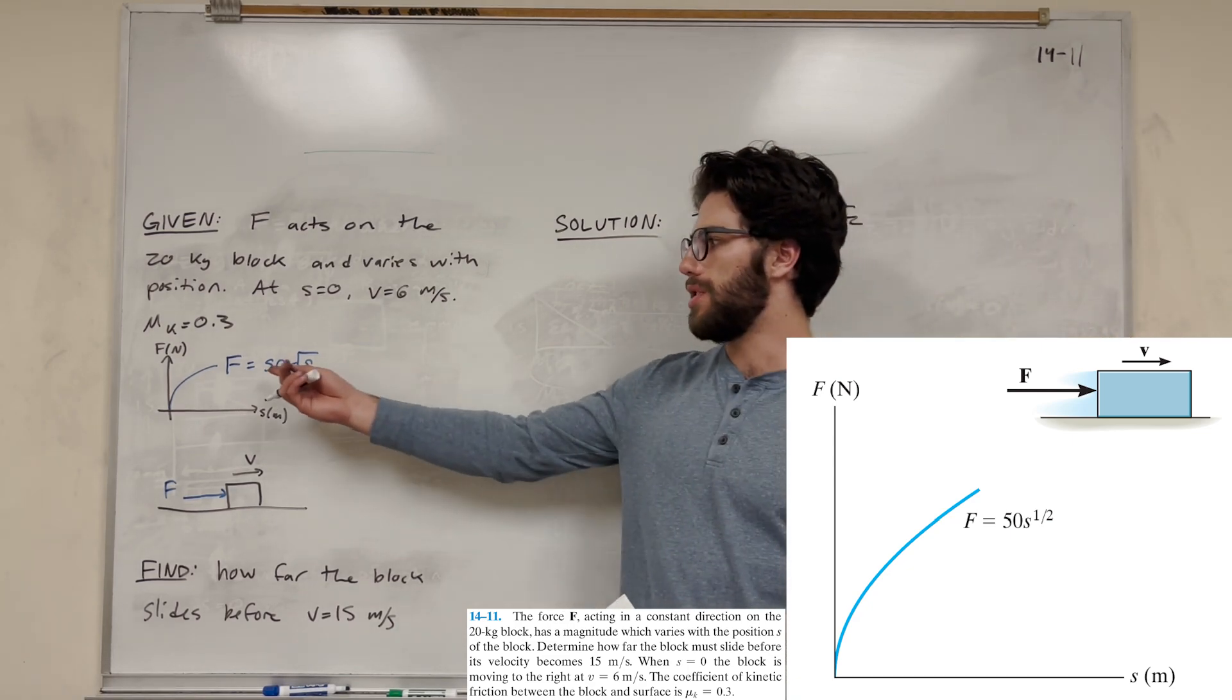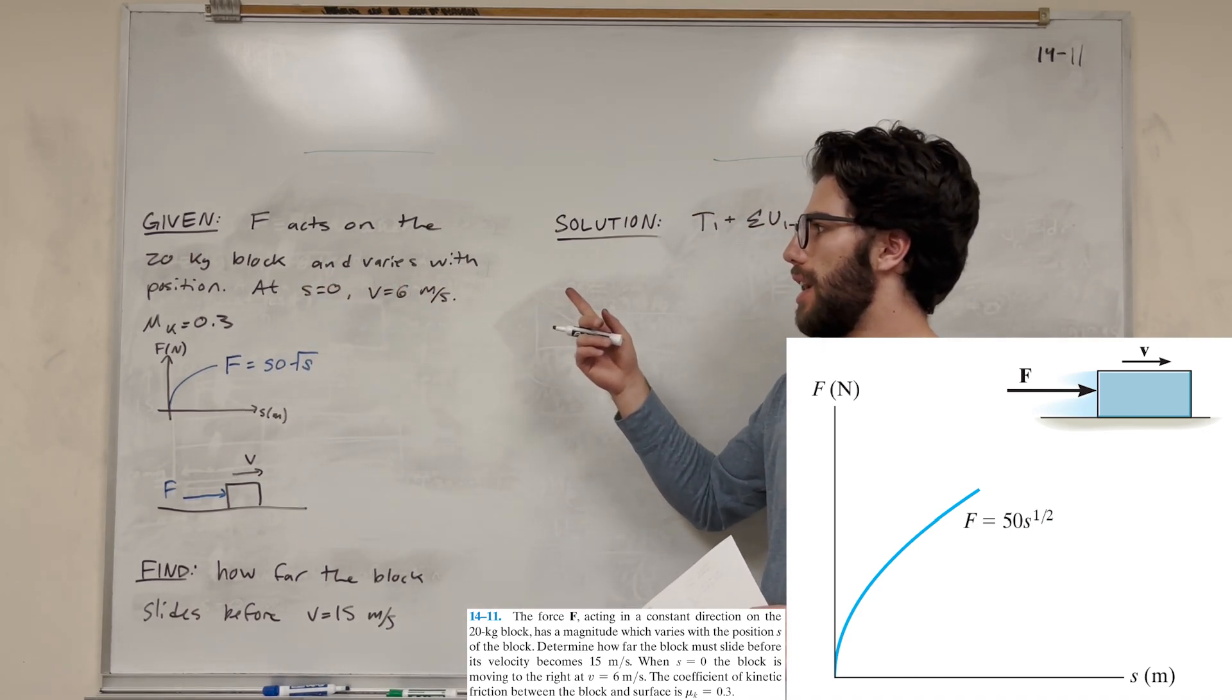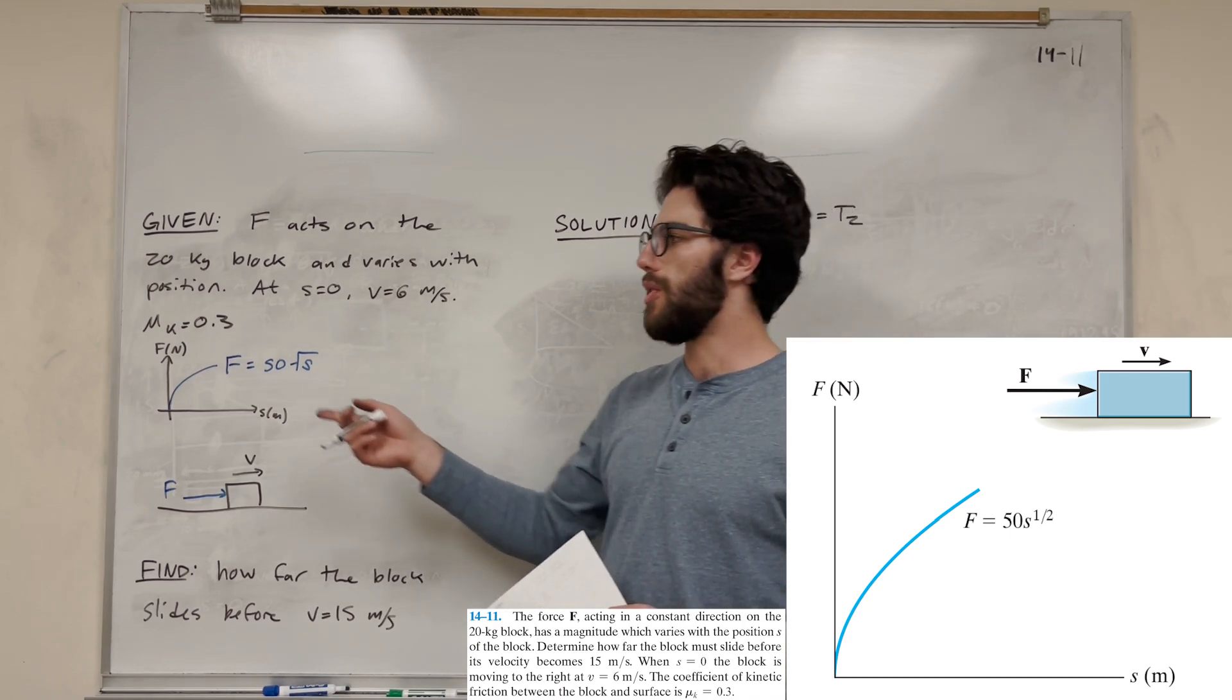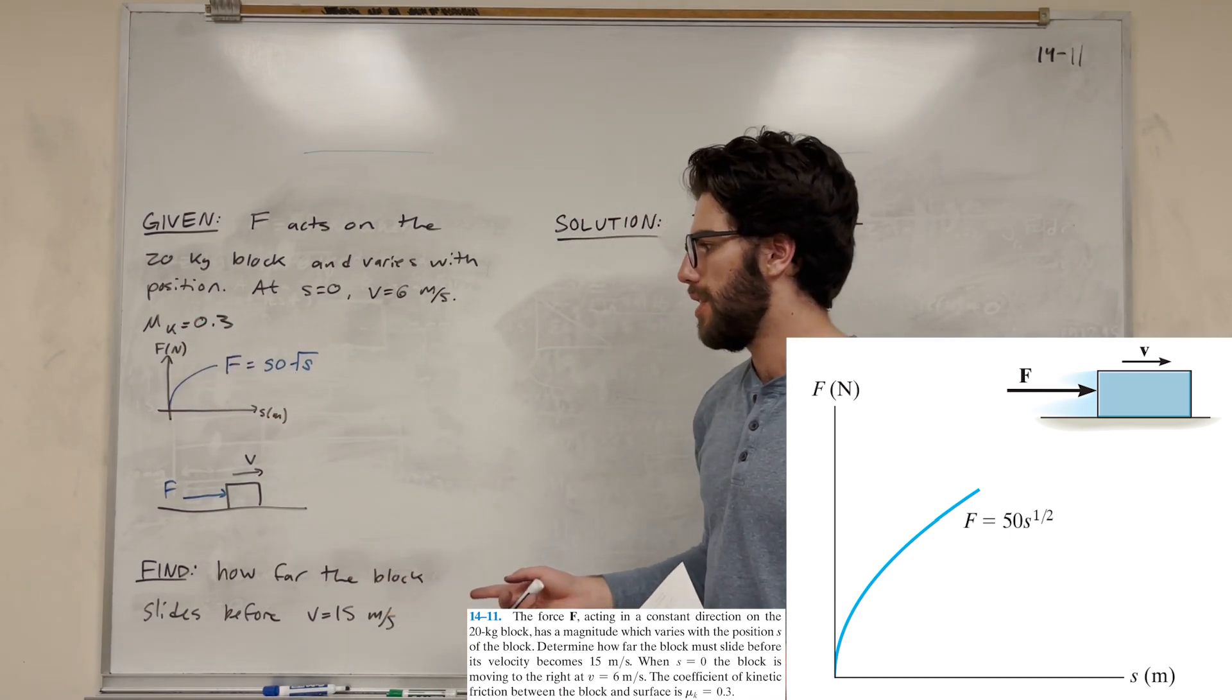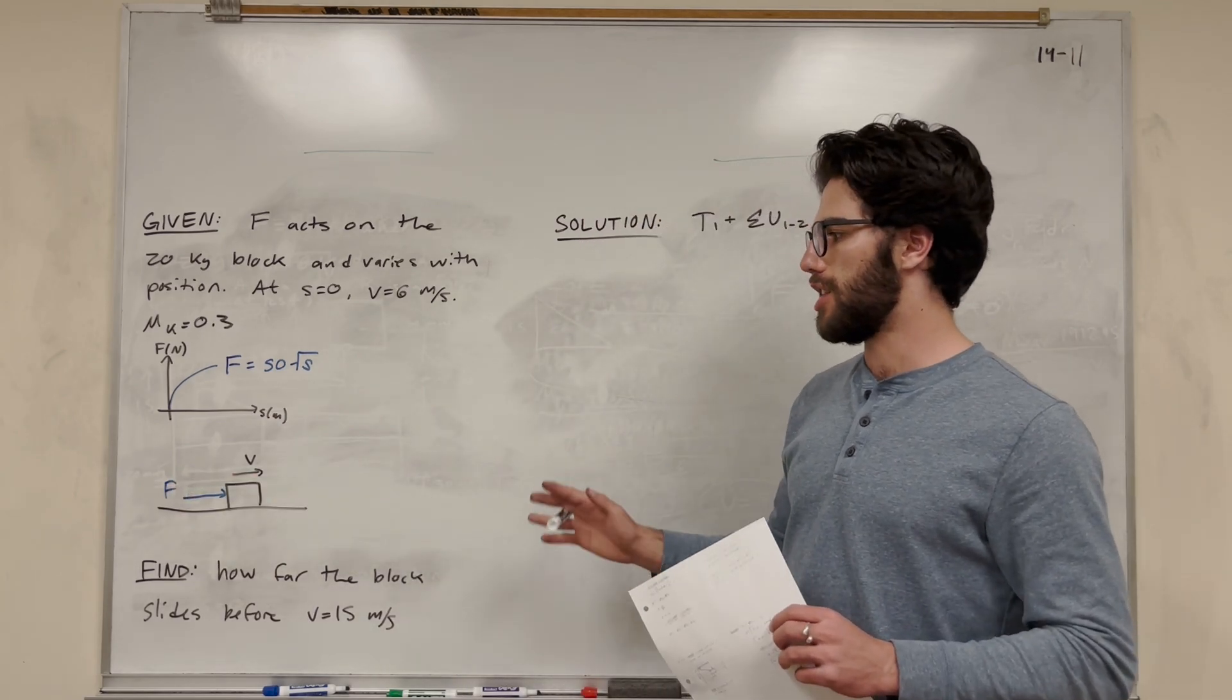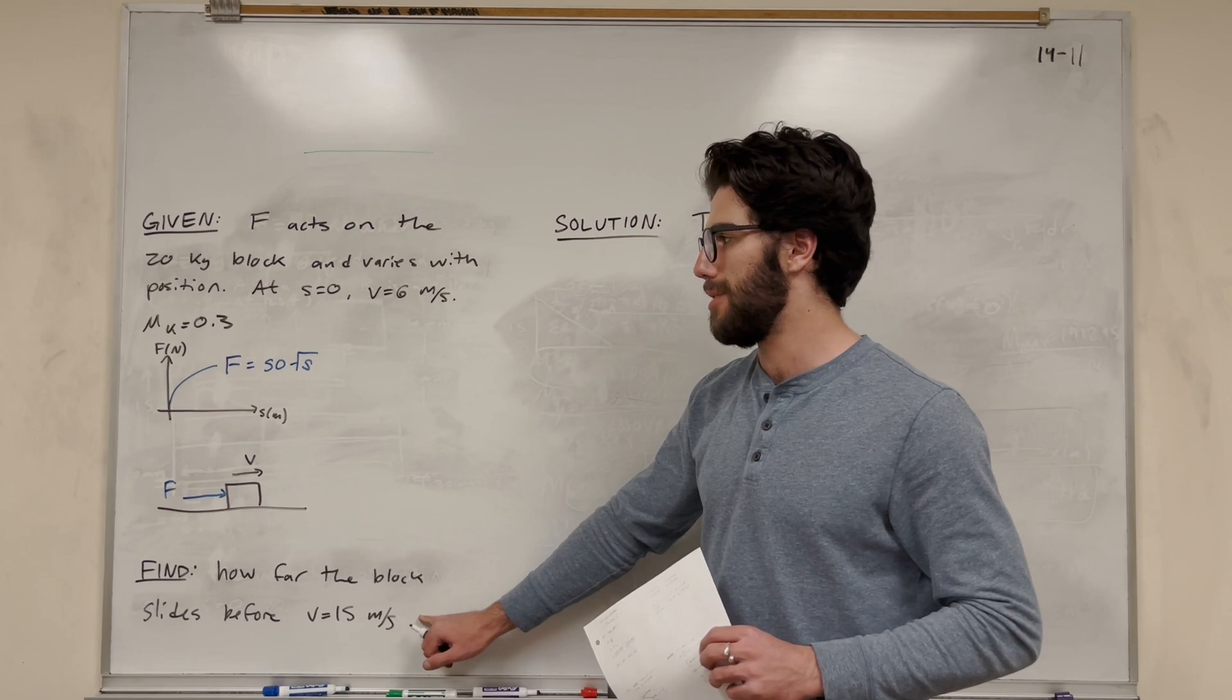What we have is a force which varies with position acting on the block. At s equals zero, initially we have a velocity of six meters a second. We also have a coefficient of kinetic friction. The force is pushing on the block in the same direction it's going. We're trying to find how far the block slides before it reaches 15 meters a second.